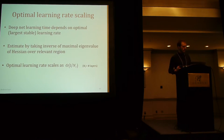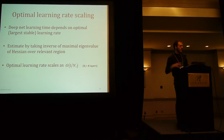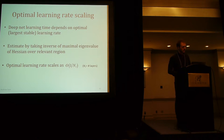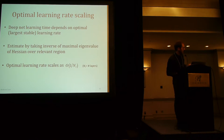What we really want to know is how learning time changes as we increase the depth of the network. To do that, we also need to know the optimal — the largest stable learning rate — because we can't just pick any learning rate. We estimate that using the inverse of the maximal eigenvalue of the Hessian, and that gives us an optimal learning rate scaling of 1 over N.